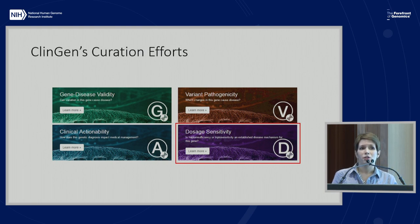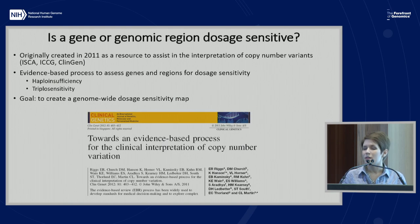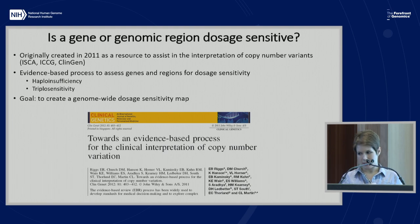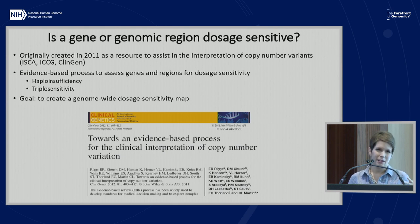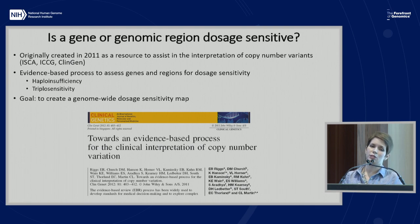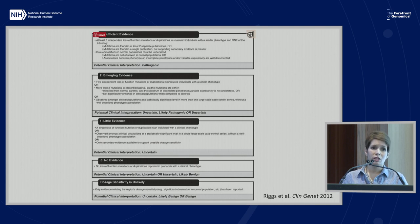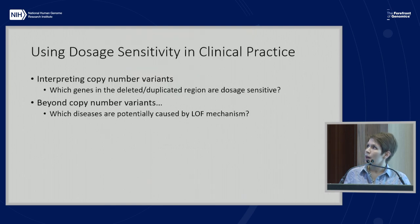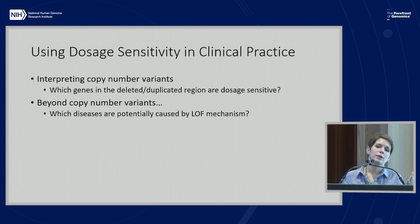Another curation activity that ClinGen is involved in is dosage sensitivity. The question we're trying to address here is: is a gene or genomic region dosage sensitive — haploinsufficient or triplosensitive? This process was created as a resource to help in the interpretation of copy number variants as identified on a chromosomal microarray. We've developed an evidence-based process to assess genes and regions for both haploinsufficiency and triplosensitivity, with a goal of creating a genome-wide dosage map. If you're looking at a copy number variant you're unsure of, you can put its coordinates into our dosage map and see if any of those genes are dosage sensitive.